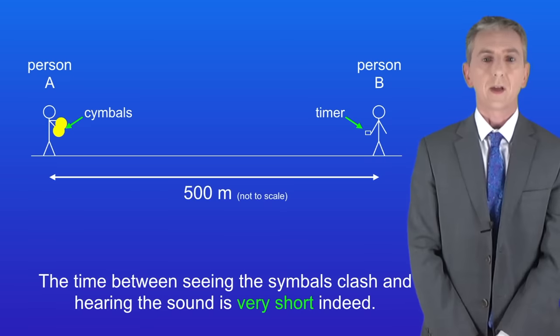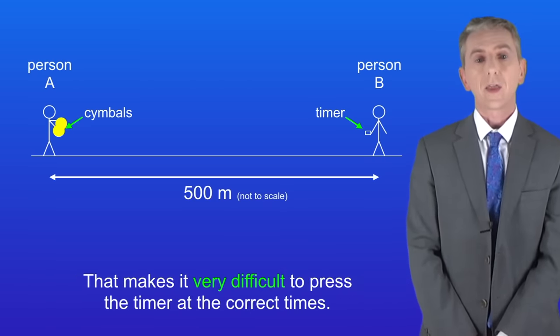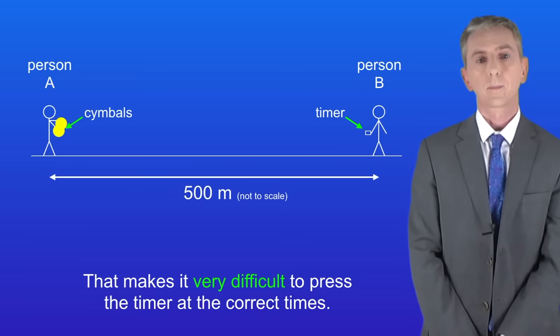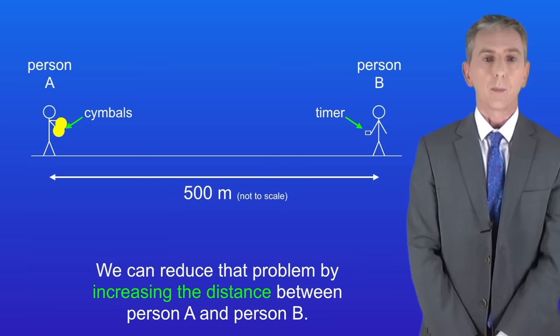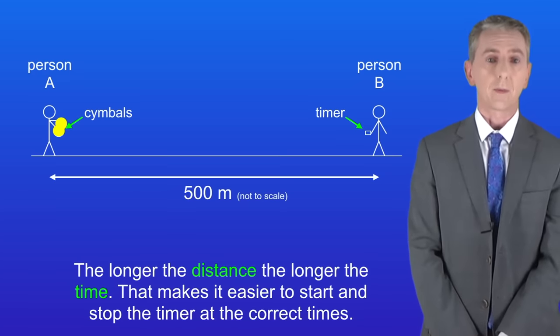Now, the second problem is that the time between seeing the symbols clash and hearing the sound is very short indeed. That makes it very difficult to press the timer at the correct times. We can reduce that problem by increasing the distance between person A and person B. The longer the distance, the longer the time. That makes it easier to start and stop the timer at the correct times.